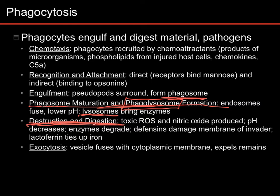Then you've got to get rid of the waste products. Some of the stuff that you digest is going to be useful — sugars, proteins, things like that. But a lot of it is going to be waste that the cell doesn't really have any use for. You've got to get rid of that through exocytosis — you basically just spit it out of the cell.